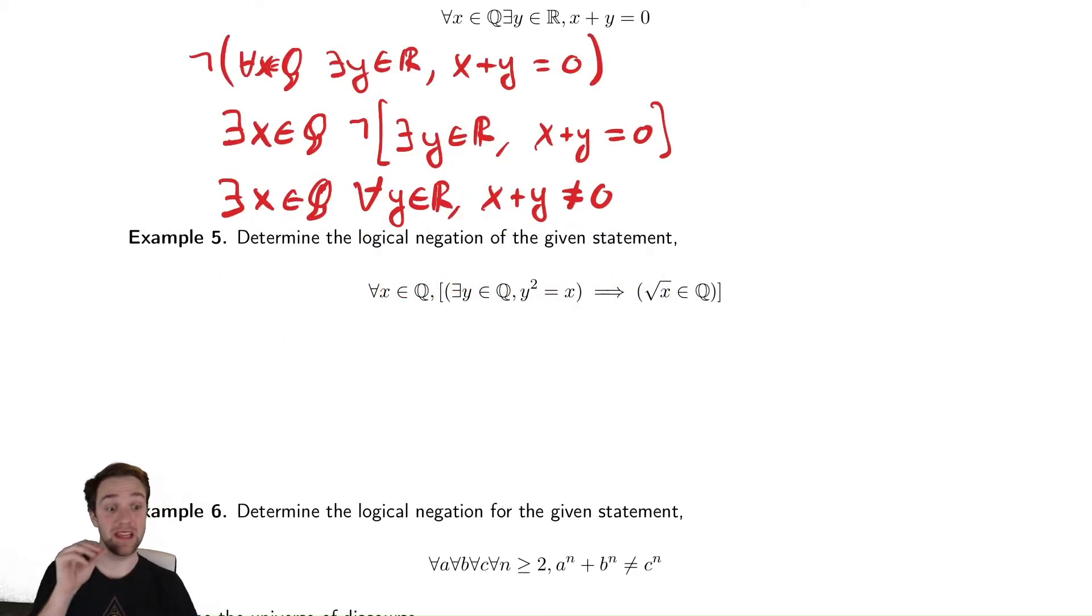For every single rational number, if there is a number that is the square of it, then you can take the square root. So saying if it is the square of something, then the square root is also a rational number. This is very strange to say because if you notice, there's parentheses here to help clarify that it's if this thing exists, then this other thing is true. So we negate this, we're going to want to be equally careful.